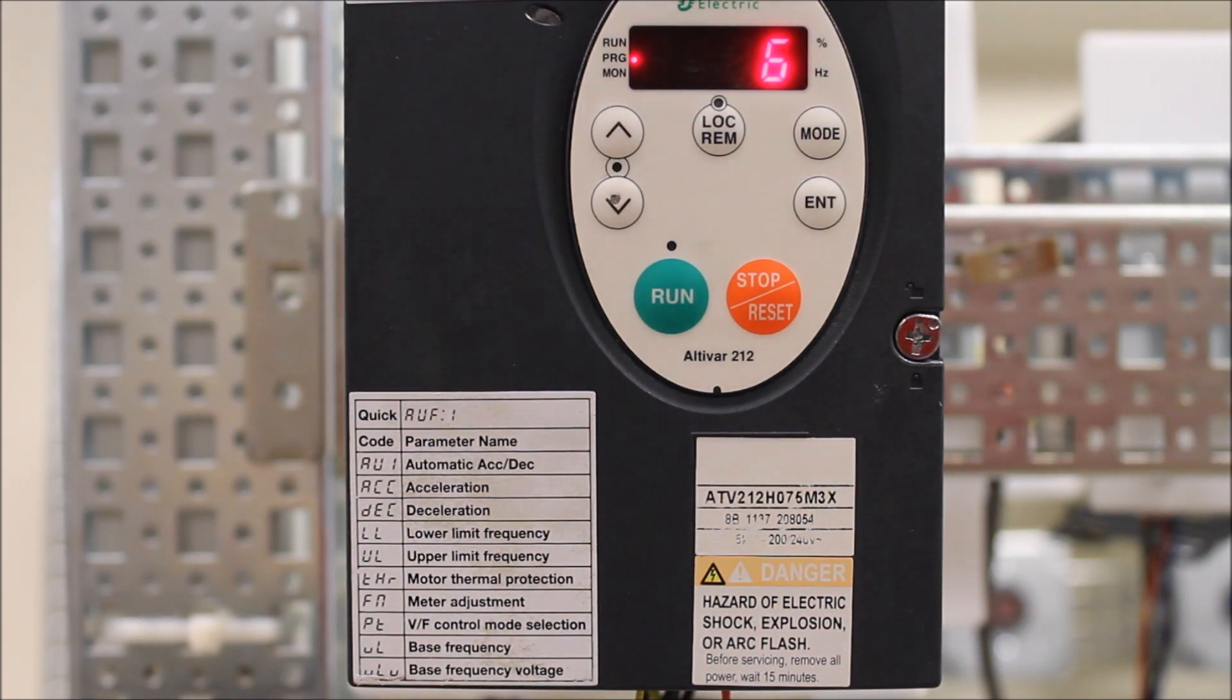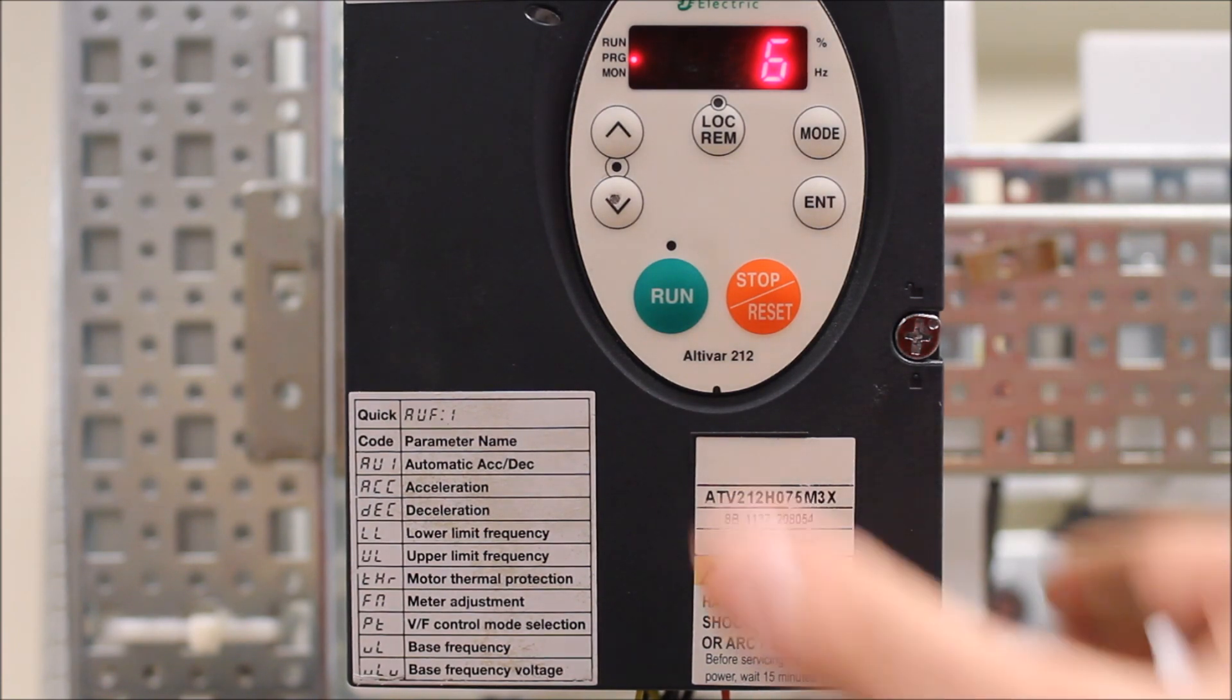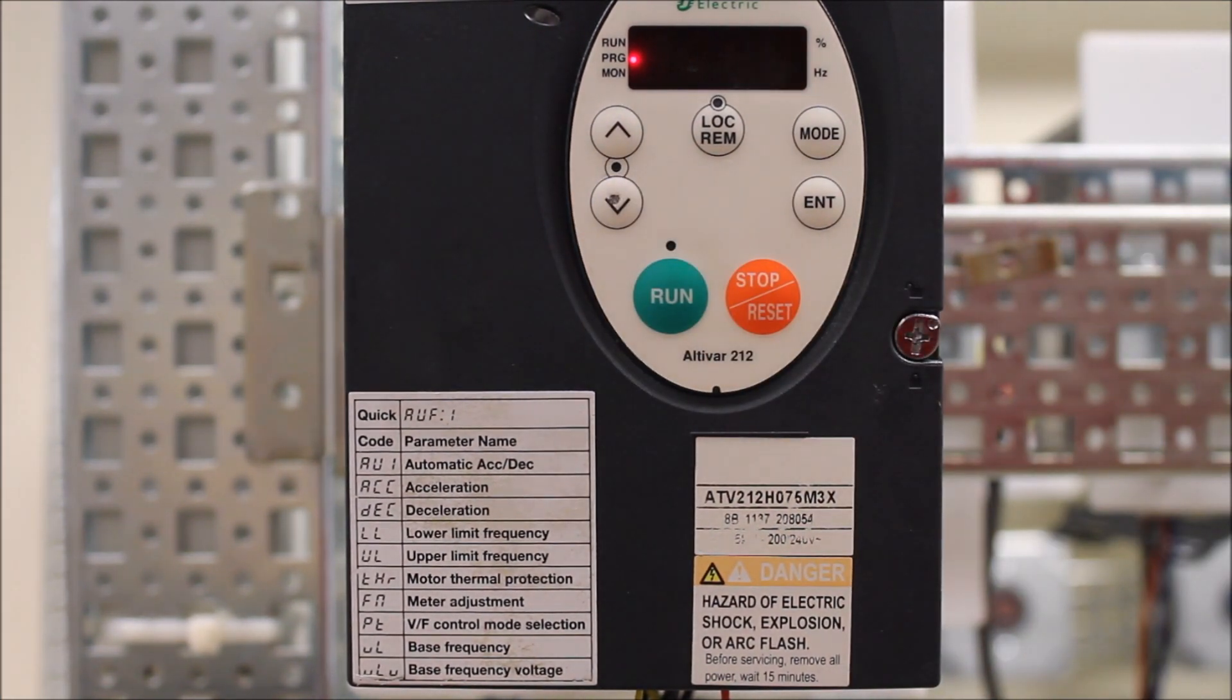And from a default setting, the F112 setting is set to six, which is a permissive function. I'm sorry, not a permissive, but a preset speed function. And we want a permissive. So to make that change, you have to make it a one. So F112 needs to be a one.